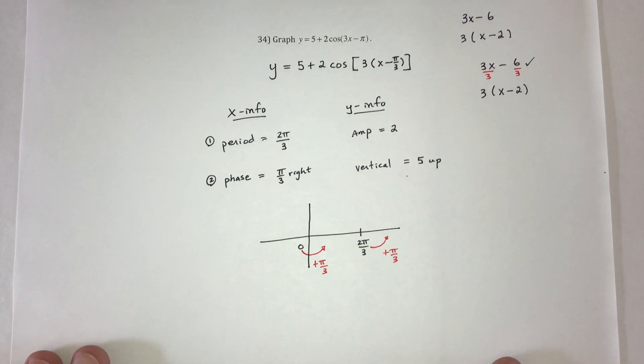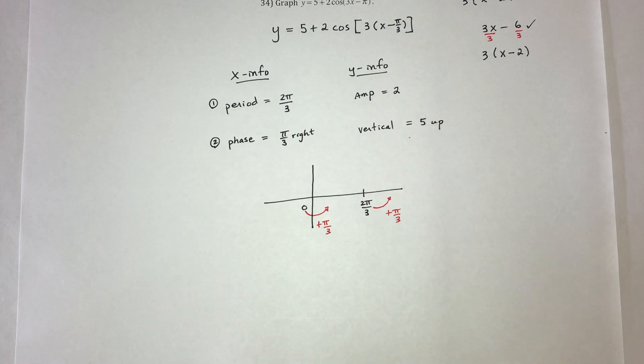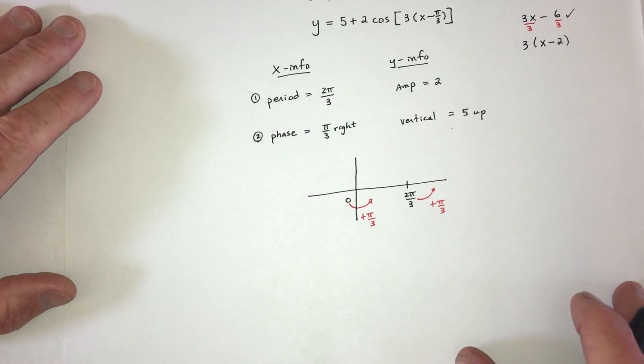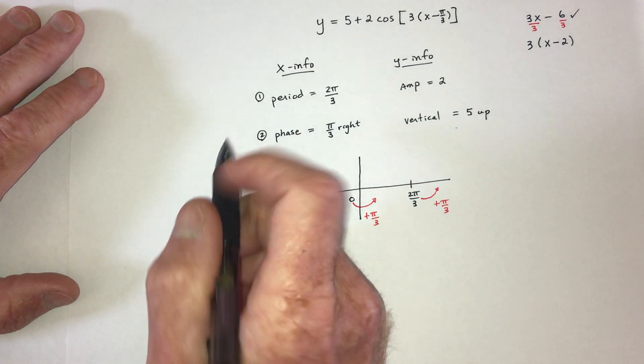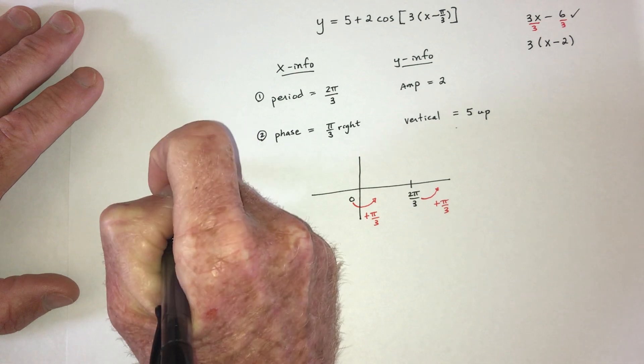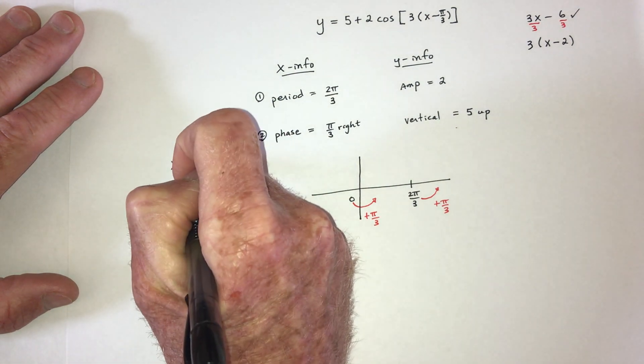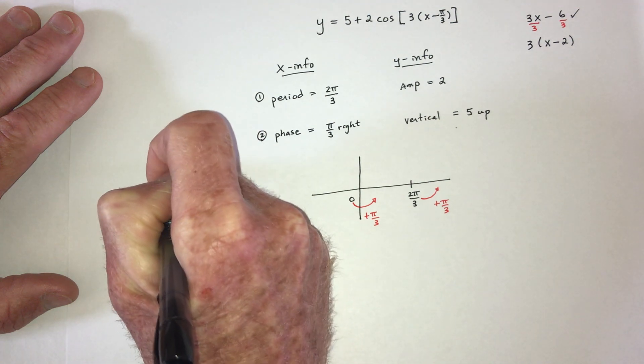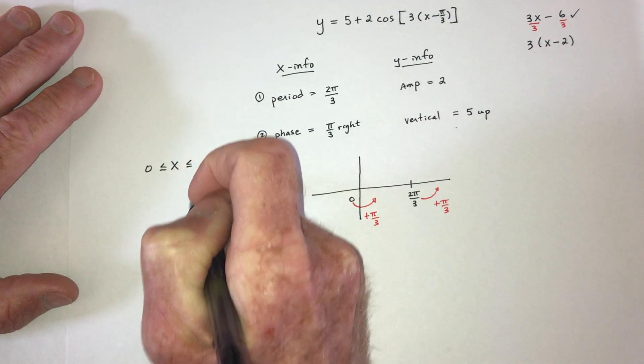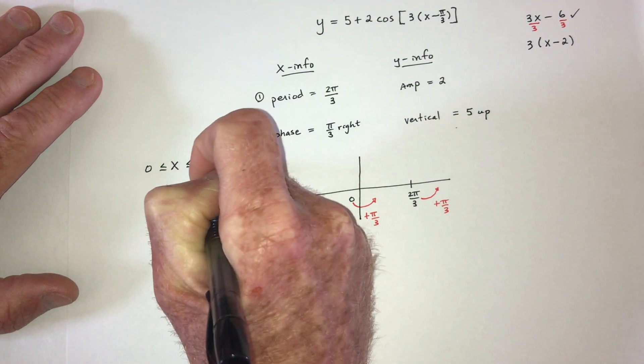Now there's a slightly different way you could do this part. So I'm going to do that over here on the left. So for number 1, you could go, we're talking about the x-axis. And the period is 2 π over 3. So that means x has to range between 0 and 2 π over 3.